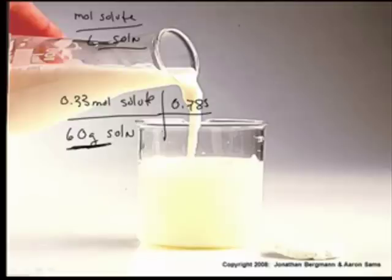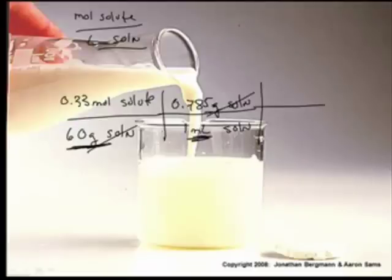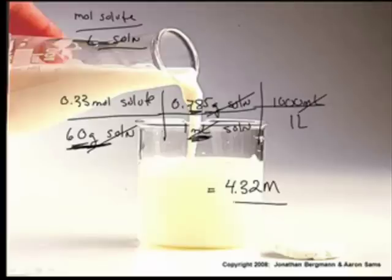It's 0.785. And watch how I do this. I can say 0.785 grams of solution per one milliliter of solution. That's the density, grams per milliliter. Now, my grams of solution cancel. And I want moles per liter. But I've got mLs down here. So I can say there's 1,000 mLs in 1L. And my milliliters cancel. And I now have moles per liter. So you take 0.33 divided by 60 times 0.785 times 1,000, you get a 4.32 molar solution.